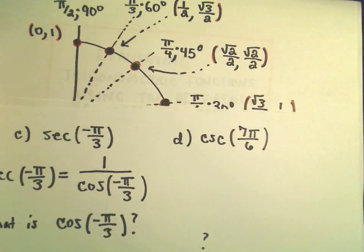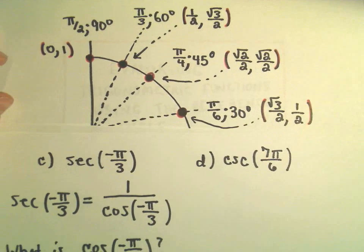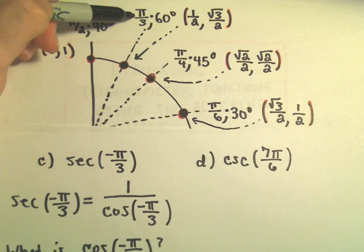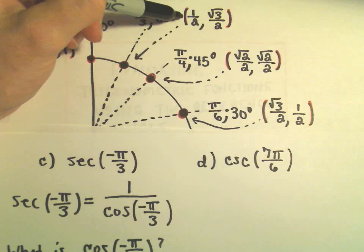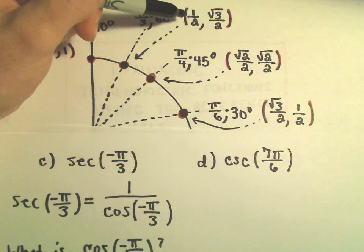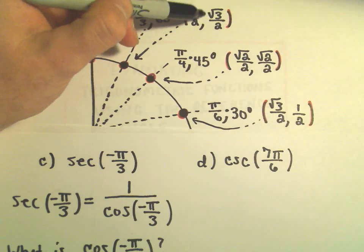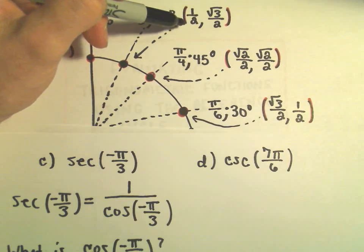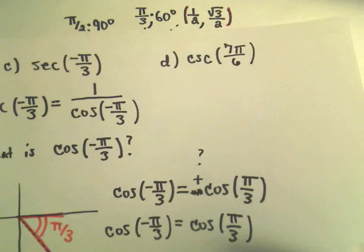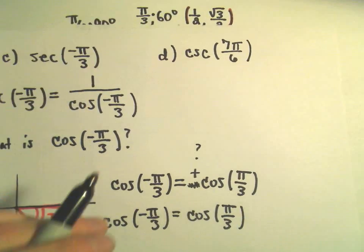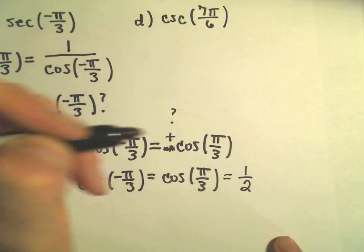Now to find cosine of pi over 3, I just find my angle pi over 3 and think: what's the point that goes with it? It's (1/2, √3/2). Cosine is defined to be the x-coordinate. So cosine of pi over 3 is simply going to equal 1/2.